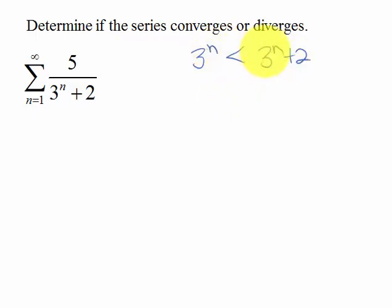We have n being the positive integers, and so if I took reciprocals, 1 over 3^n is going to be greater than 1 over 3^(n+2).